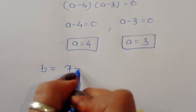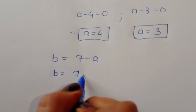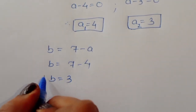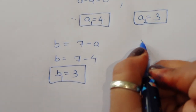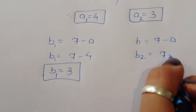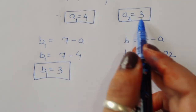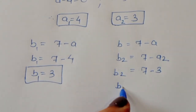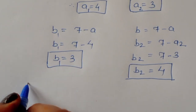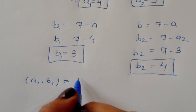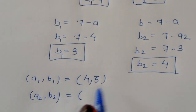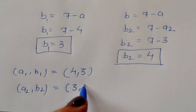Using b = 7 − a: for a₁ = 4, b₁ = 7 − 4 = 3. For a₂ = 3, b₂ = 7 − 3 = 4. So we have (a₁, b₁) = (4, 3) and (a₂, b₂) = (3, 4).